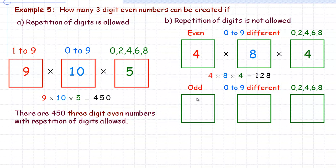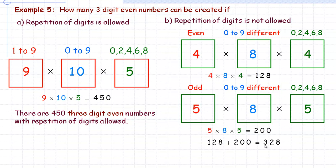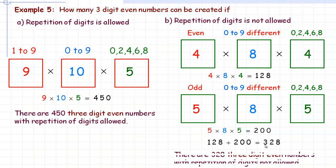Case two: the number starts with an odd digit (1, 3, 5, 7, or 9) — five ways for the hundreds digit. The units digit still must be even (0, 2, 4, 6, or 8), and since no even digit has been used yet, there are still five ways for it. The tens digit must differ from both chosen digits, so again 8 ways. That gives 5 × 8 × 5 = 200. Adding both cases: 128 + 200 = 328 three-digit even numbers with no repetition allowed.